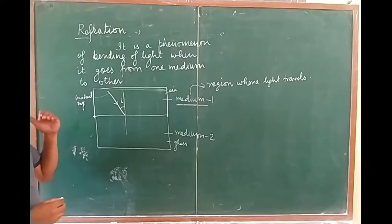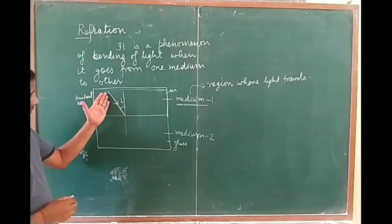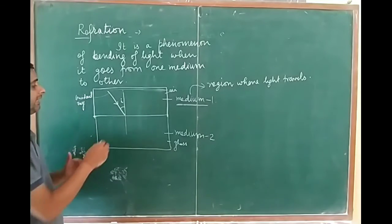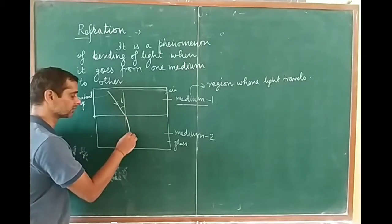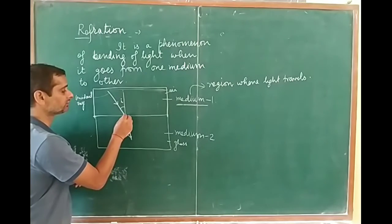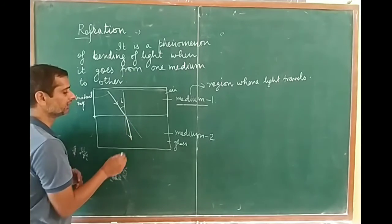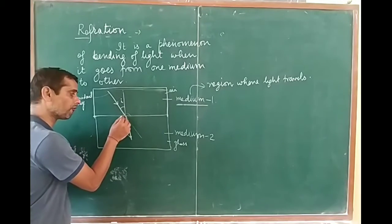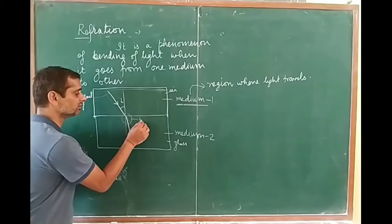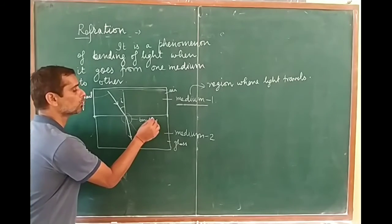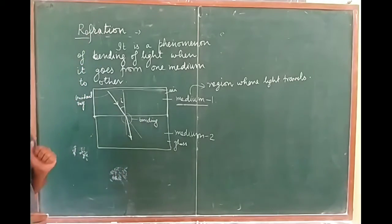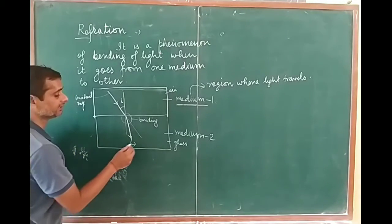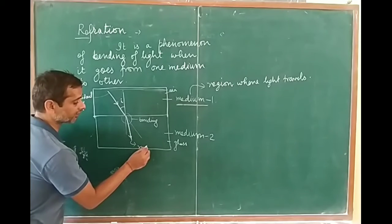When light strikes or goes from one medium to another, it bends from its path. Instead of going in the same direction, it bends. This phenomenon of bending is known as refraction, and the ray which emerges from this bending is known as the refracted ray.